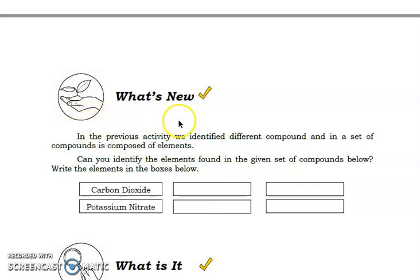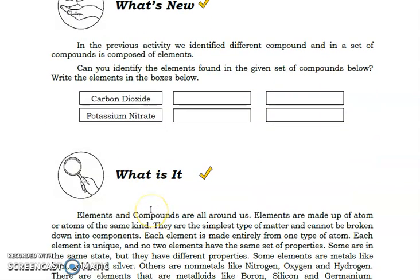Let's proceed with the what's new. In the previous activity, we identified different compounds and a set of compounds are composed of elements. Can you identify the elements found in the given set of compounds below? Write the elements in the boxes below. This is our third activity. Copy the six boxes. On the first box, we have carbon dioxide. Can you identify what are the two elements for carbon dioxide? Then the second box is potassium nitrate. Then write on the boxes what are the two elements for this compound.